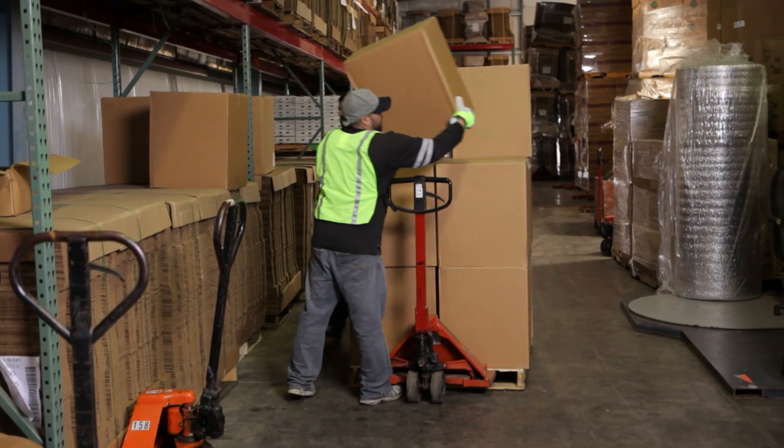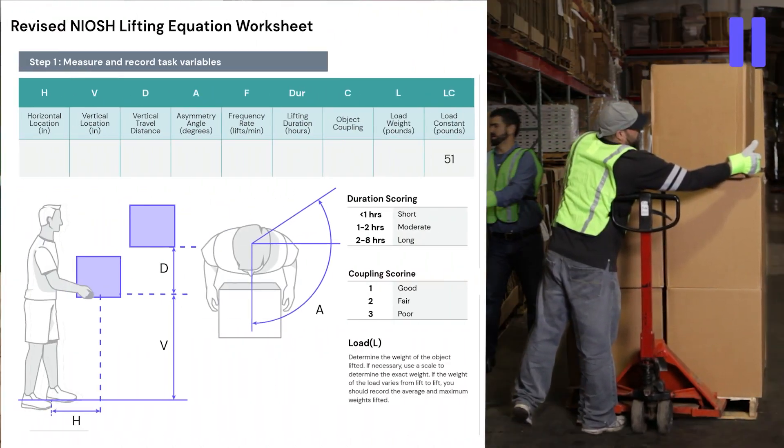Now let's talk about each component in our recommended weight limit calculation with an example of two warehouse workers loading a pallet jack with stock. First off, look at task variable number one. That's the horizontal location measurement from the center of a line between the inner ankle bones to the center of a line between the middle knuckles of the hands. We collected a field measurement for the horizontal location, and in this case the horizontal reach is 17 inches.